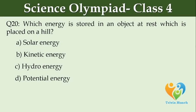Which energy is stored in an object at rest which is placed on a hill? Option A: Solar energy. Option B: Kinetic energy. Option C: Hydro energy. Option D: Potential energy.